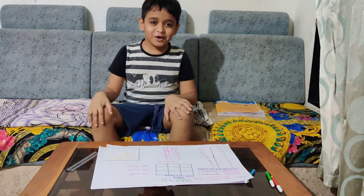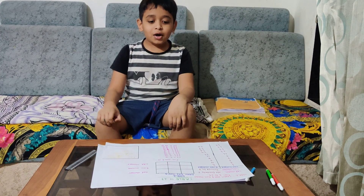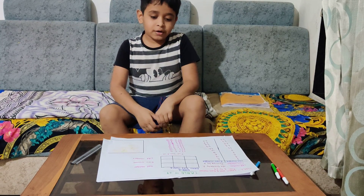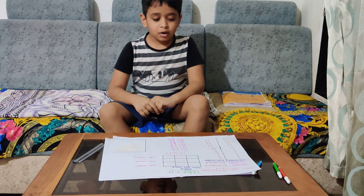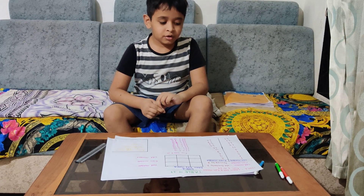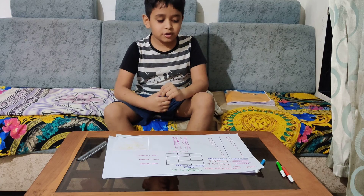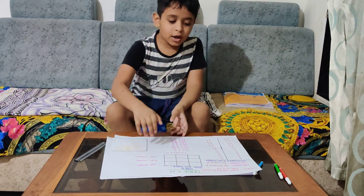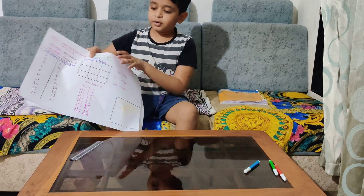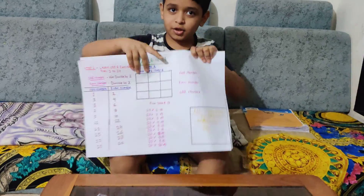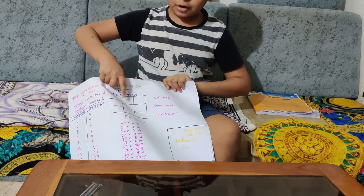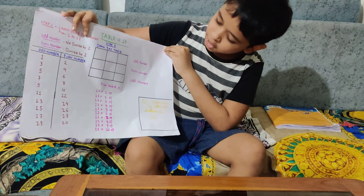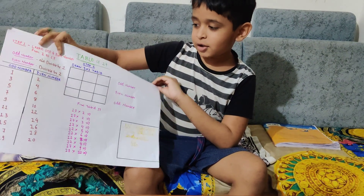Hi guys and welcome back to another video. Today I am going to be showing you a way to re-numberize the table of 17. It's easy and it's worth it. You need only odd numbers and even numbers written to 17. I just used sketch pencils, not color pencils. It looks so cool. Let's get into the video.